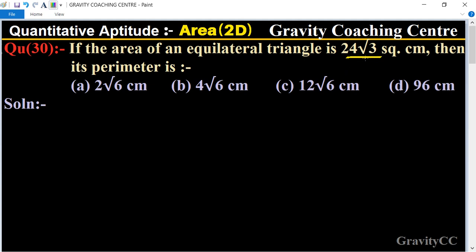The area of the equilateral triangle is 24√3. So area is 24√3. And we know that the formula of equilateral triangle equals √3/4 times side squared, so a² equals...